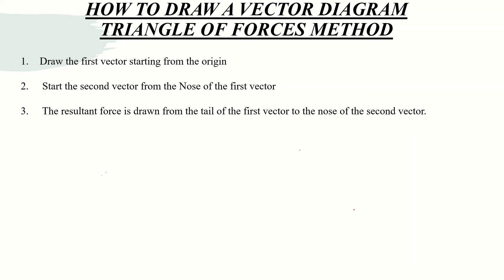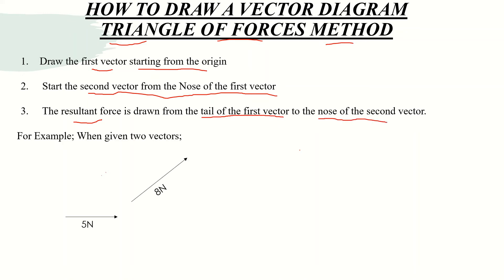Now I'll show how to draw a vector diagram. The method I'll be using is called the triangle of forces method. The first thing we do is draw the first vector starting from the origin, then draw the second vector from the nose of the first vector, and lastly draw the resultant force from the tail of the first vector to the nose of the second vector.